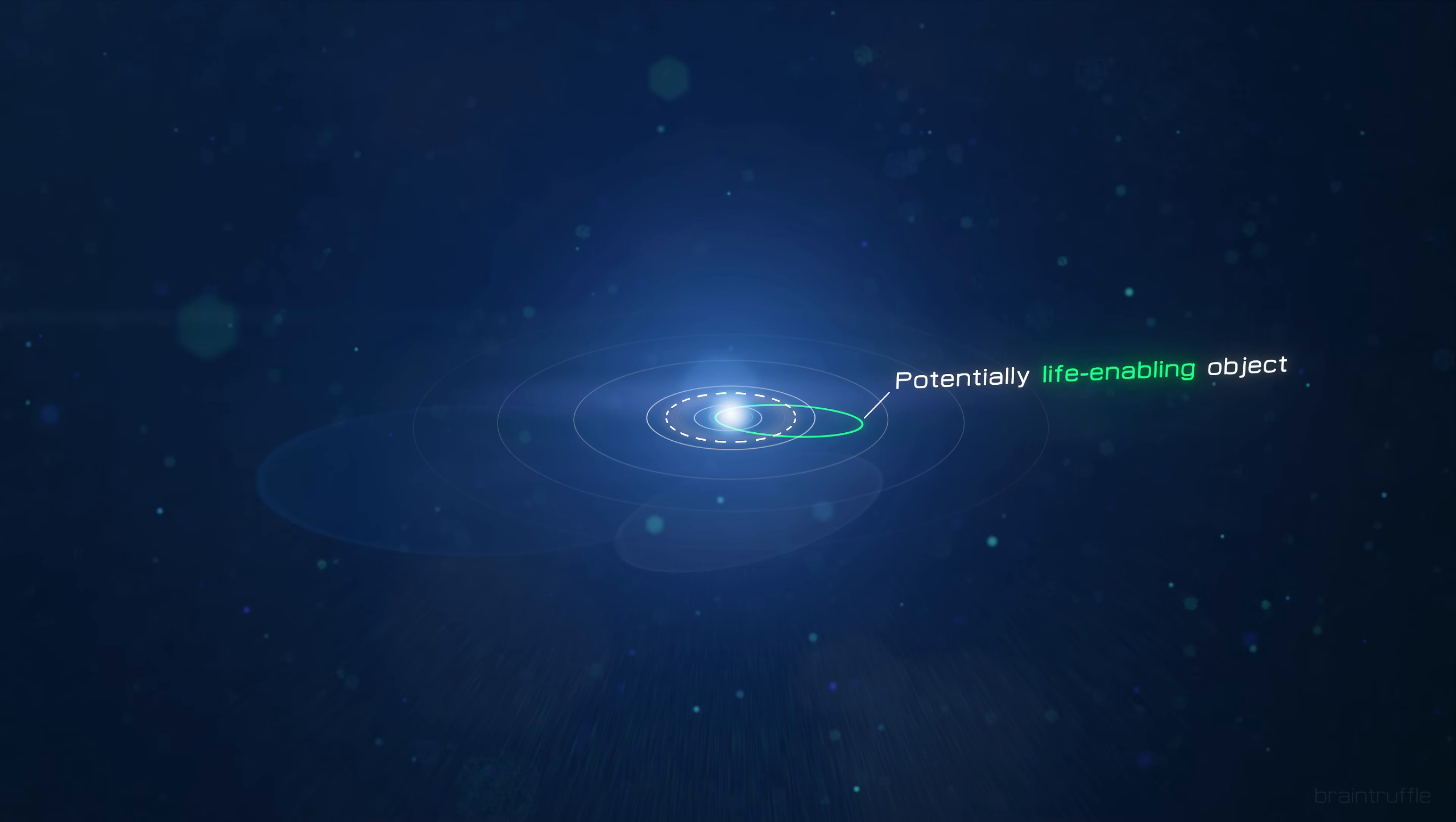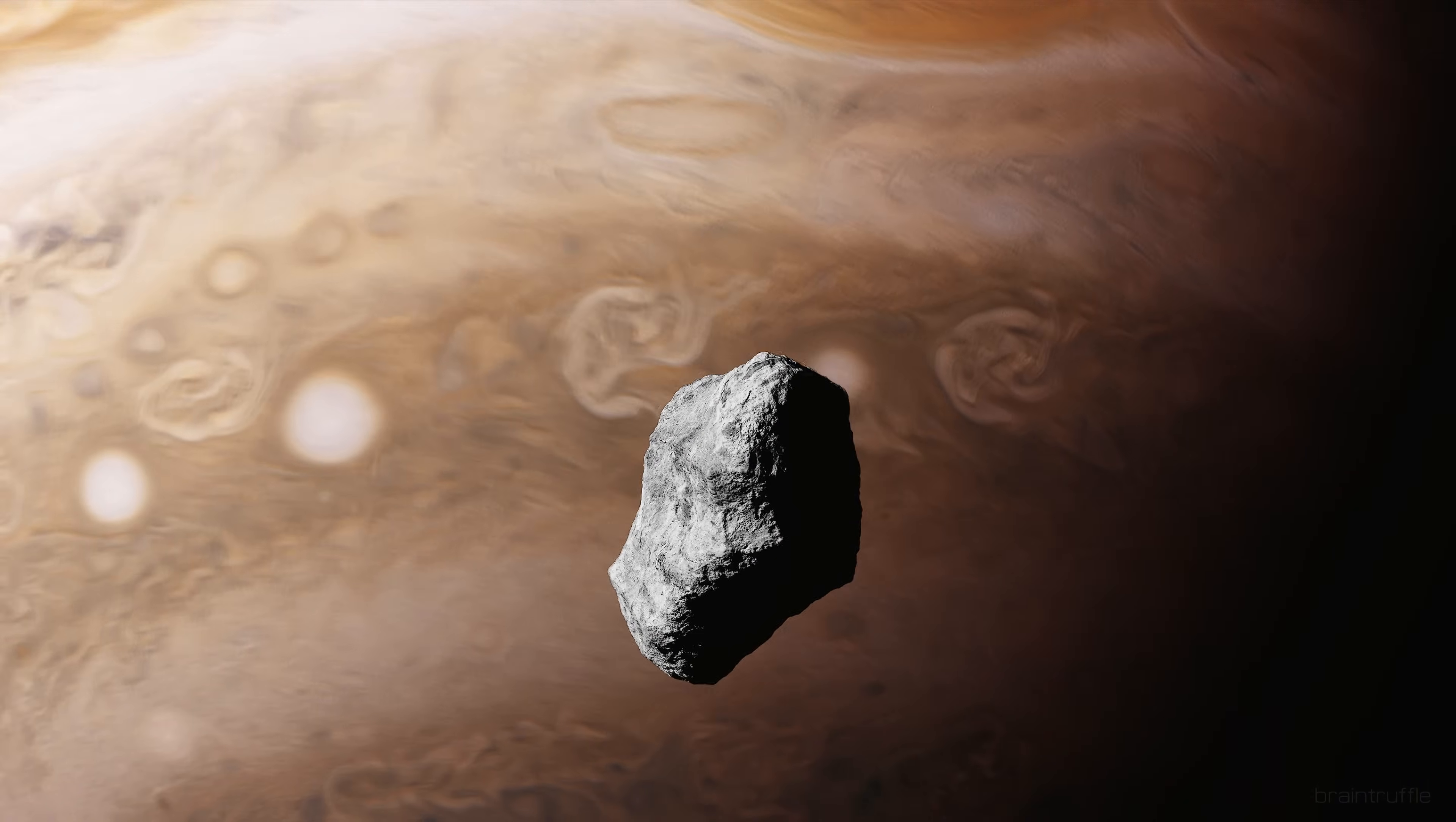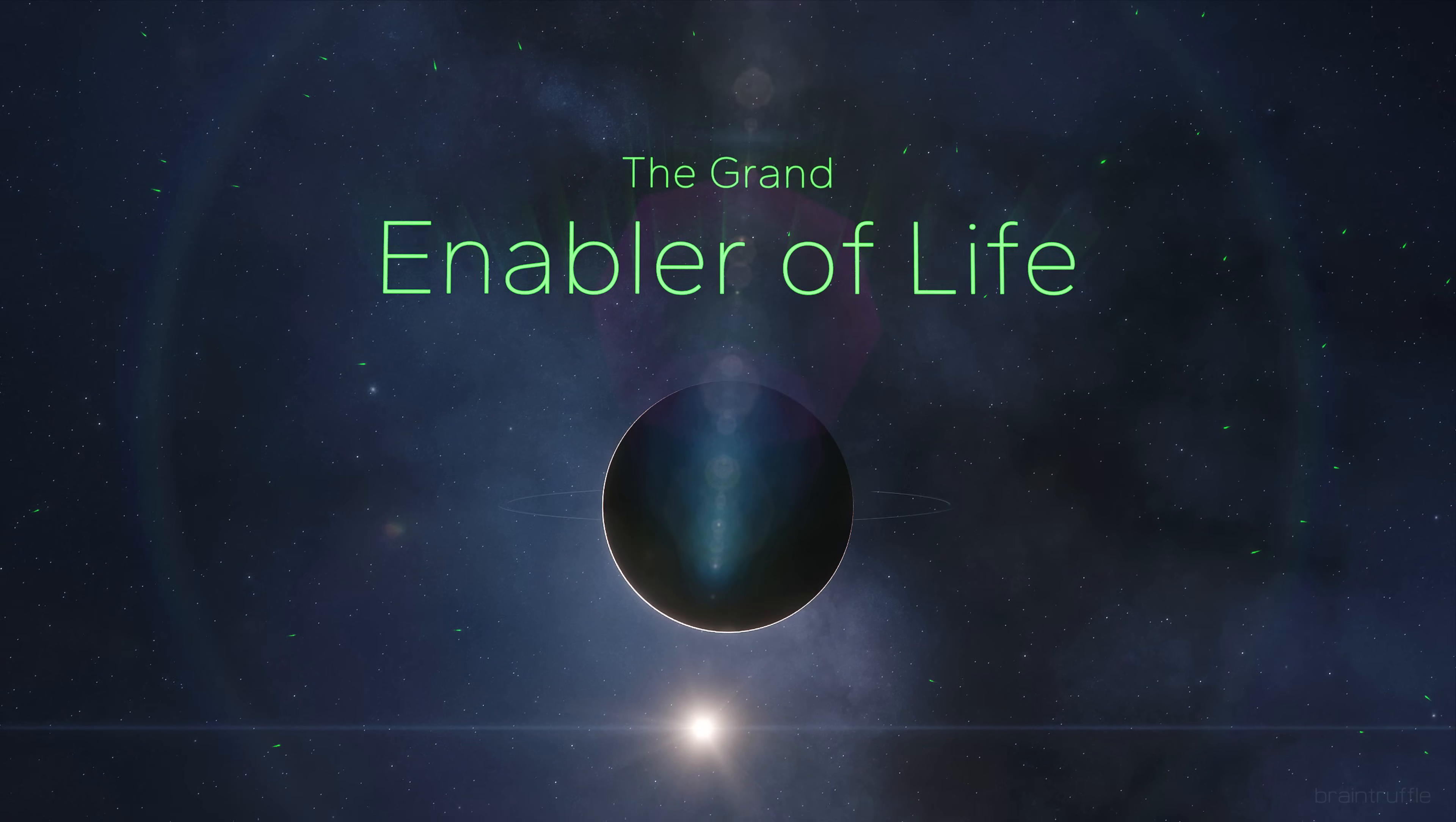And if that's true, the question whether Jupiter is a friend or a foe is secondary. Jupiter gives as much as he takes. There will be an impact. But that's part of the deal, because it's not unlikely that without earlier impacts, there wouldn't be enough life enabling material. There wouldn't be us.